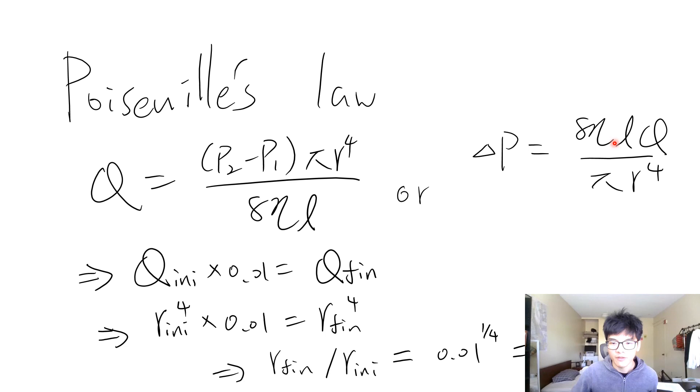And Q is the volume flow rate, which is the volume divided by the time duration it takes. Like how large is the volume of liquid passing by per second, per unit of time.